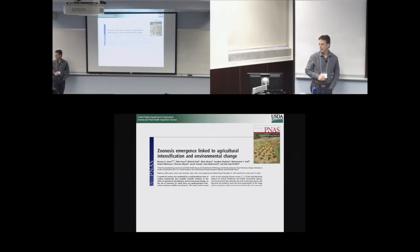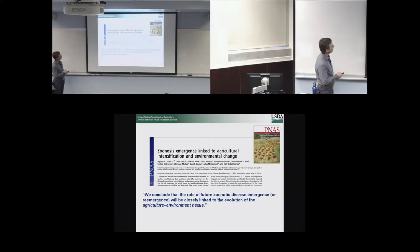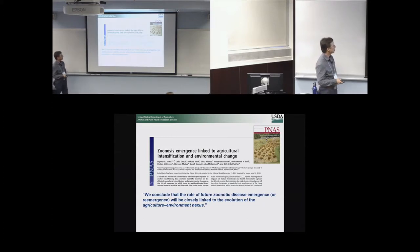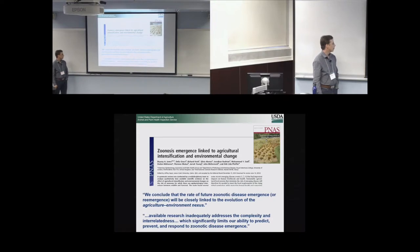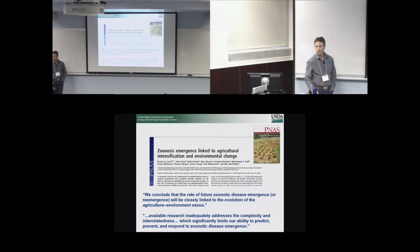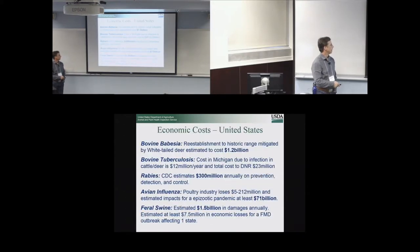Some of you might be familiar with this paper — one I like to talk about when discussing the wildlife-livestock interface. The authors concluded that the rate of future zoonotic disease emergence will be closely linked to the evolution of the agricultural-environment nexus, which to me means the wildlife-livestock interface. They point out that available research inadequately addresses the complexity and interrelatedness, which significantly limits our ability to prevent and respond to zoonotic disease emergence. It's a new and young field.